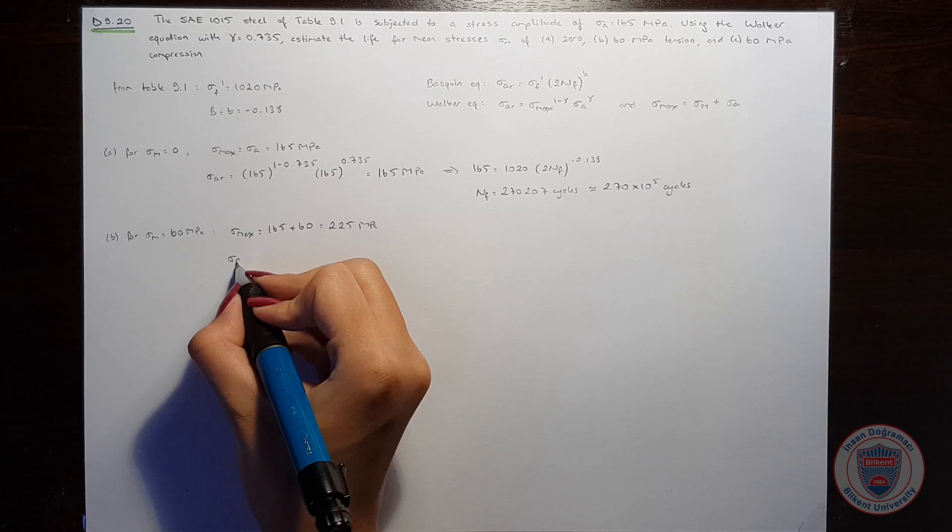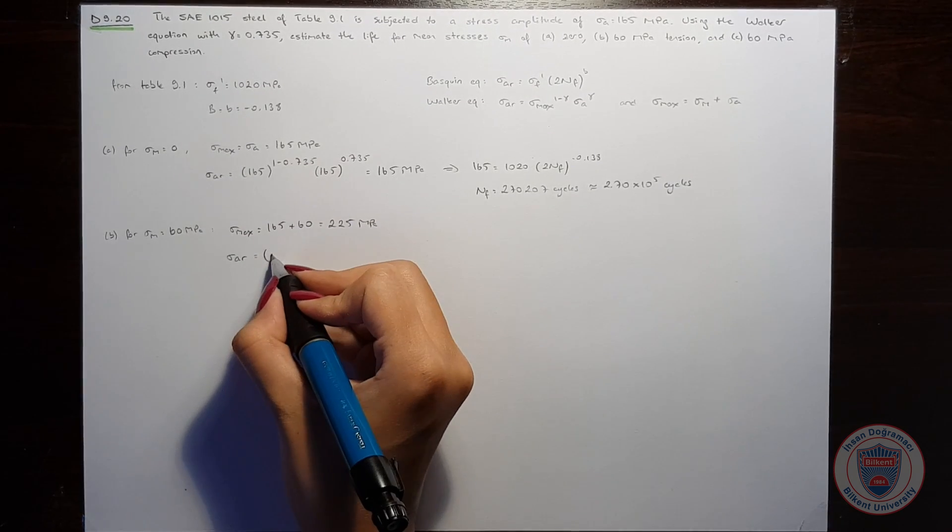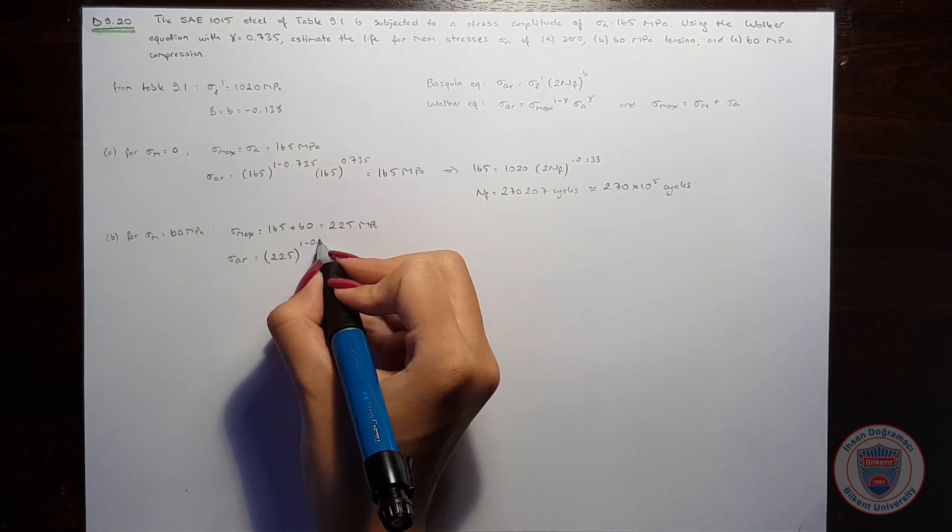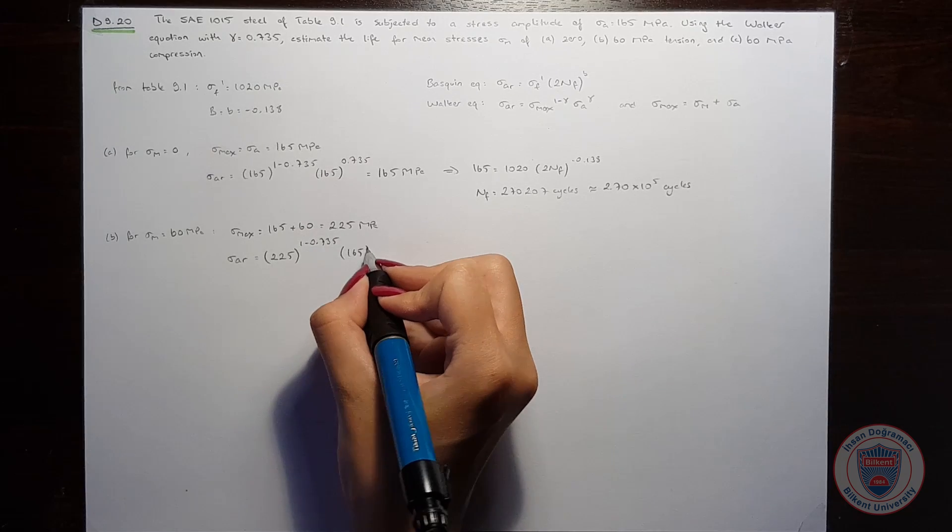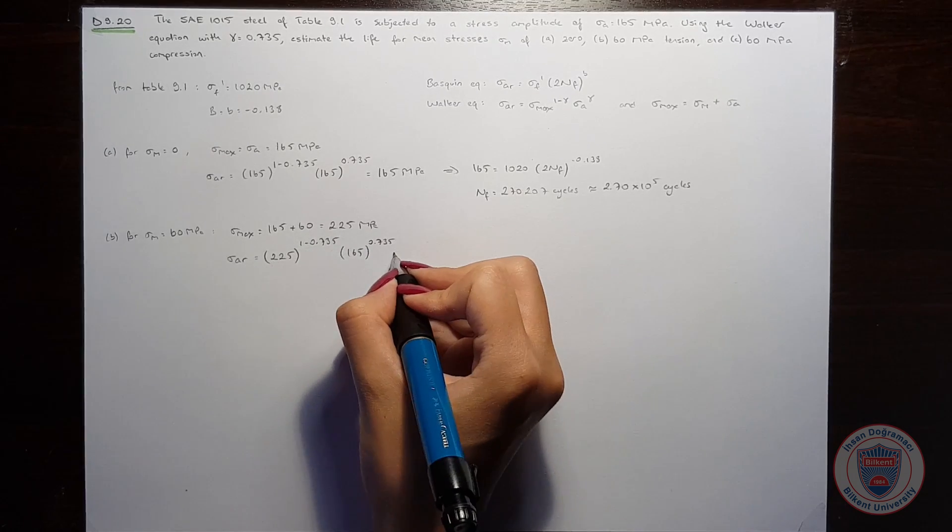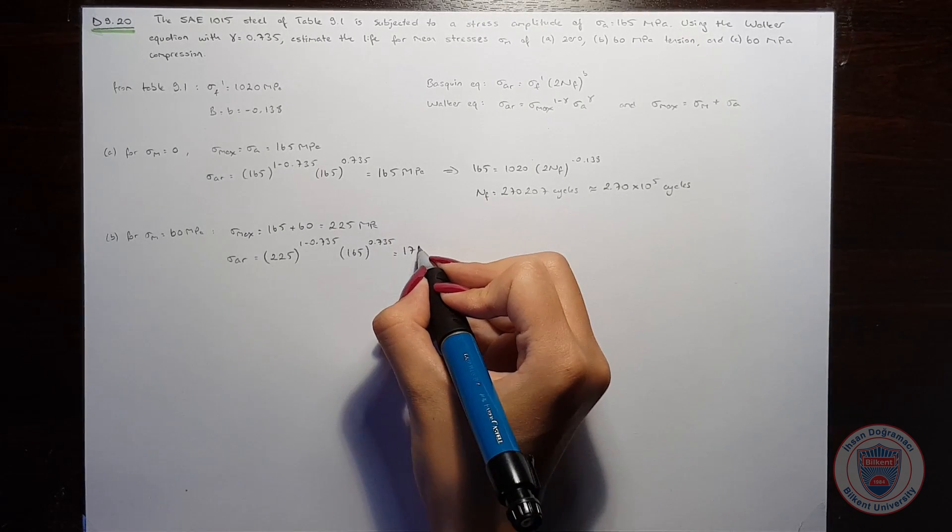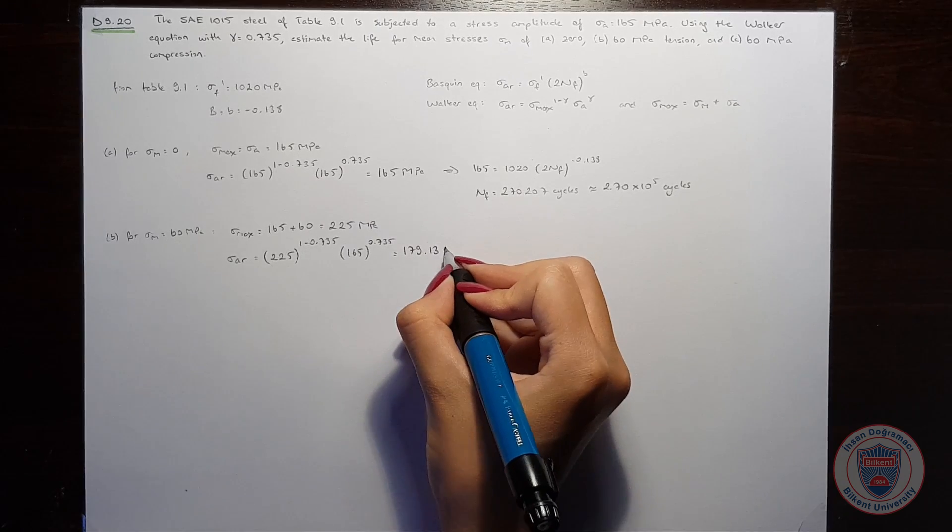Substituting this value into the Volcker equation, we obtain sigma AR equal to 179.13 MPa.